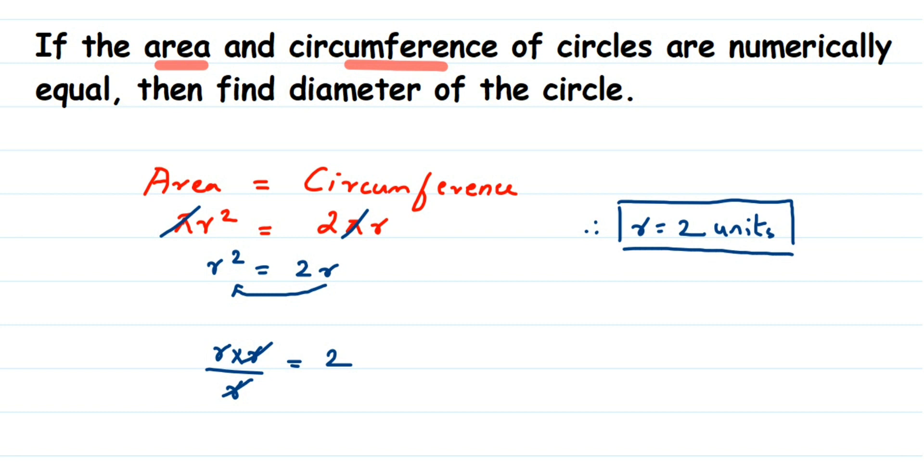So diameter will be equal to... diameter is 2 times the radius, right? It's double the radius. But we know that r is 2 units, so it is 2 into 2 units. Just multiply 2 and 2.